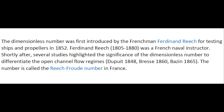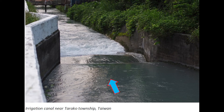Shortly after, several studies highlighted the significance of the dimensionless number to differentiate the open-channel flow regime, and the number is typically called the Reich-Froude number in France. An illustration of open-channel flow regime is seen in this man-made canal in Taiwan.